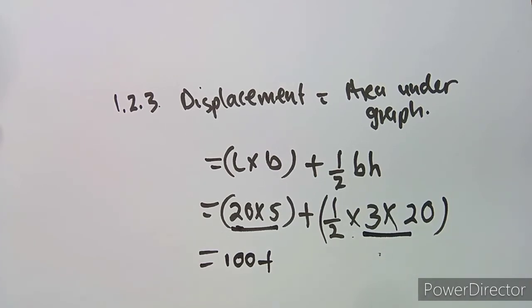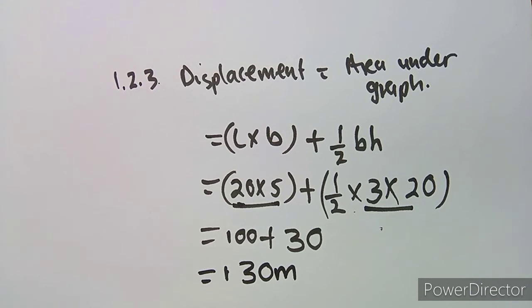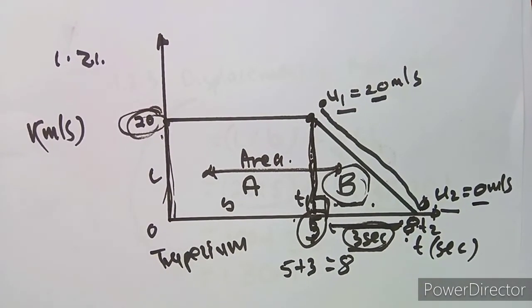For the triangle: between t=5 and t=8 there are 3 seconds, so the base is 3. The perpendicular height corresponds to 20 m/s. So the triangle area is ½ × 3 × 20 = 30. Adding them together: 100 + 30 = 130 meters. The unit is meters — not square units — because we are calculating displacement.